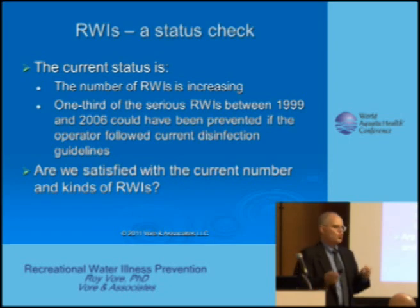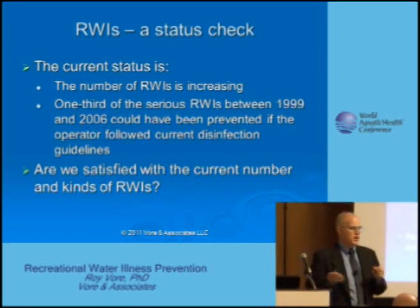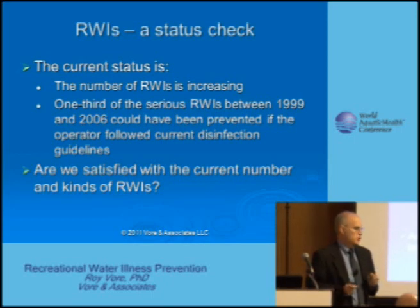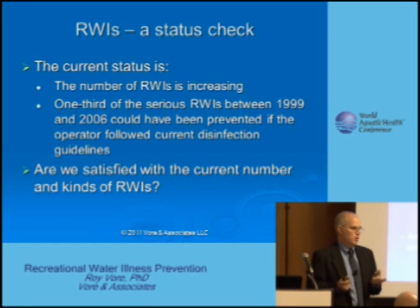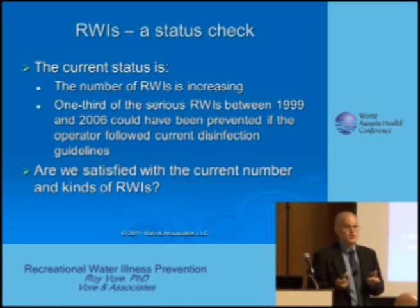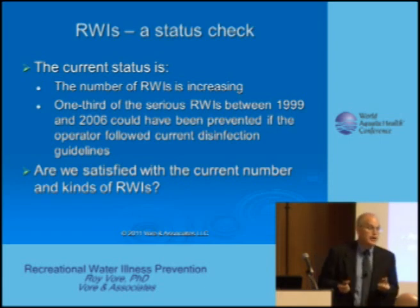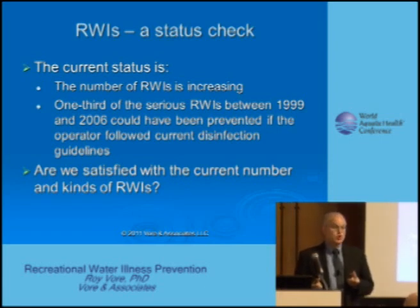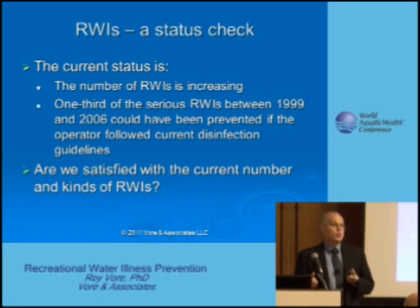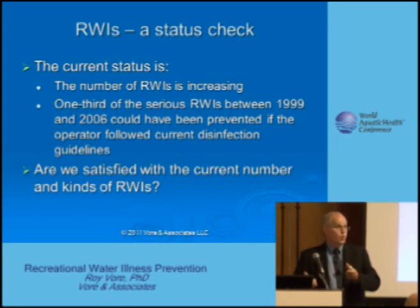If we look at the numbers prior to the last waterborne disease outbreak report, going back to the 1999 through 2006 summaries, one-third of the serious gastrointestinal illnesses — the ones we generally focus on — would have been prevented if the operator had maintained 1 ppm of chlorine or 2 ppm of bromine. Are we satisfied with a system where numbers are going up and operators are not doing what they should be doing?